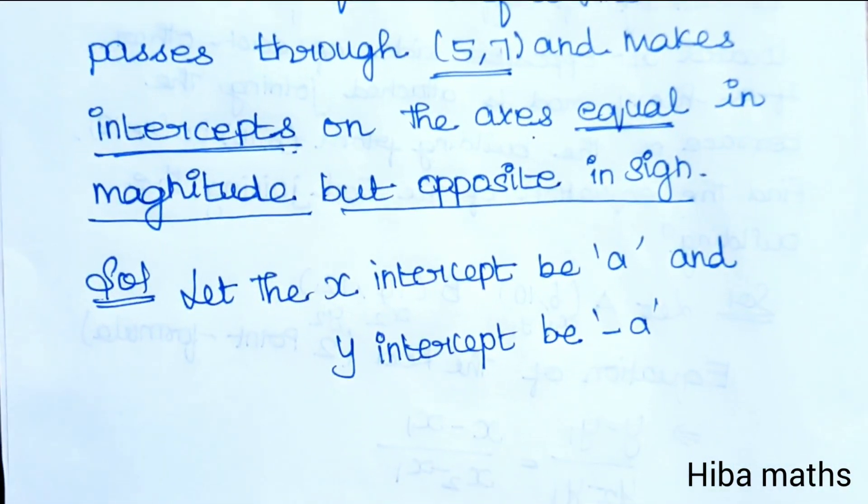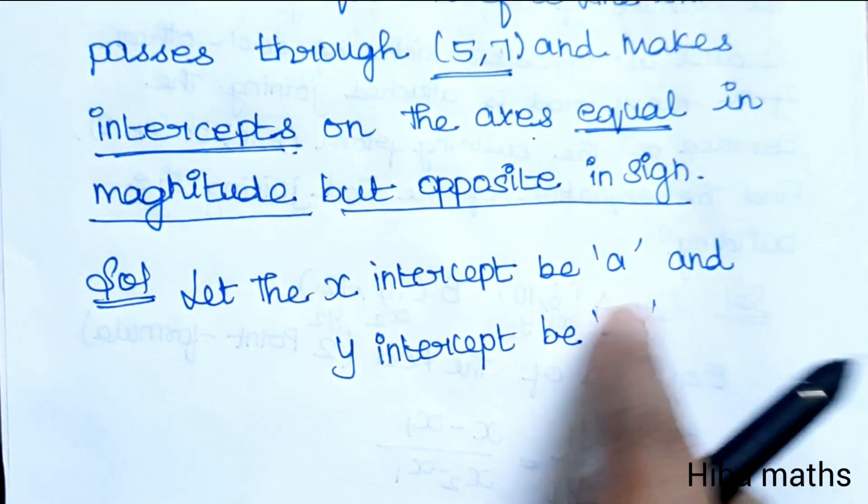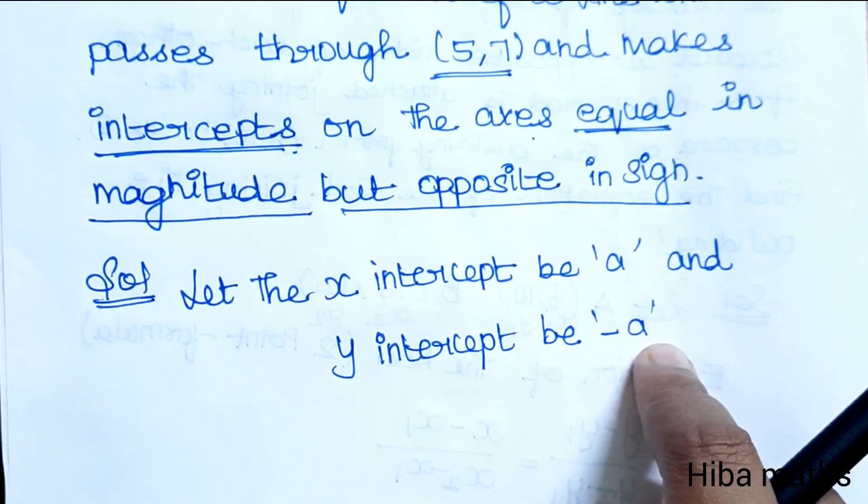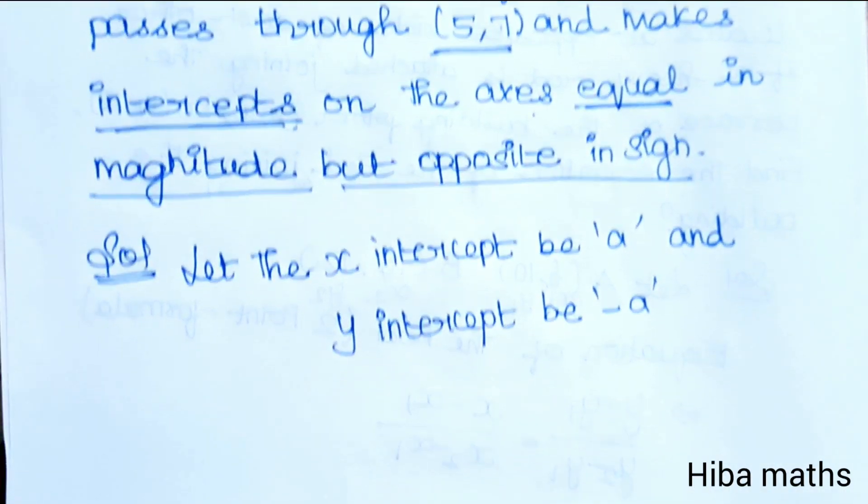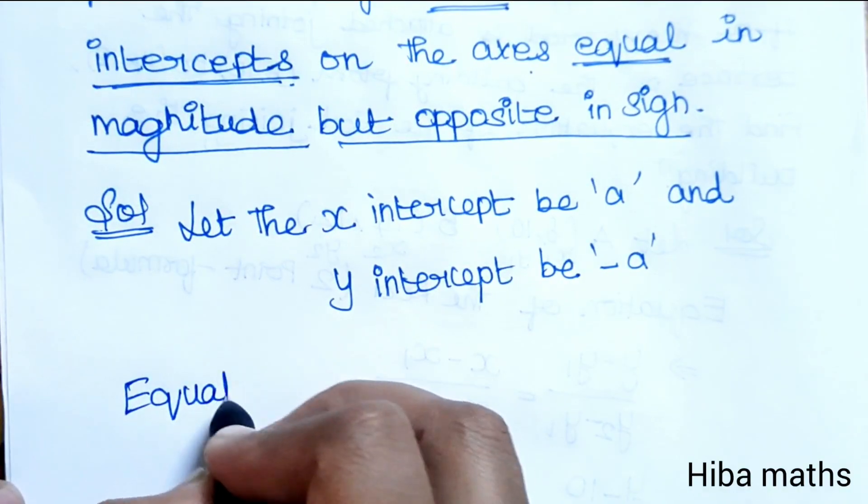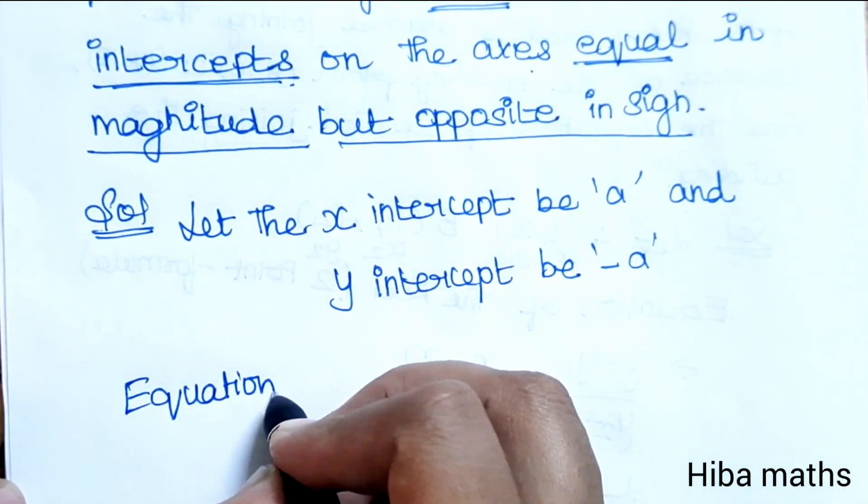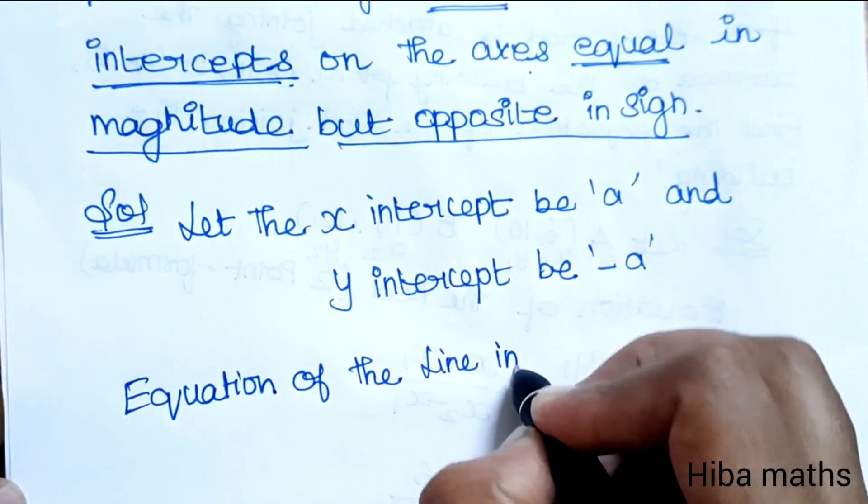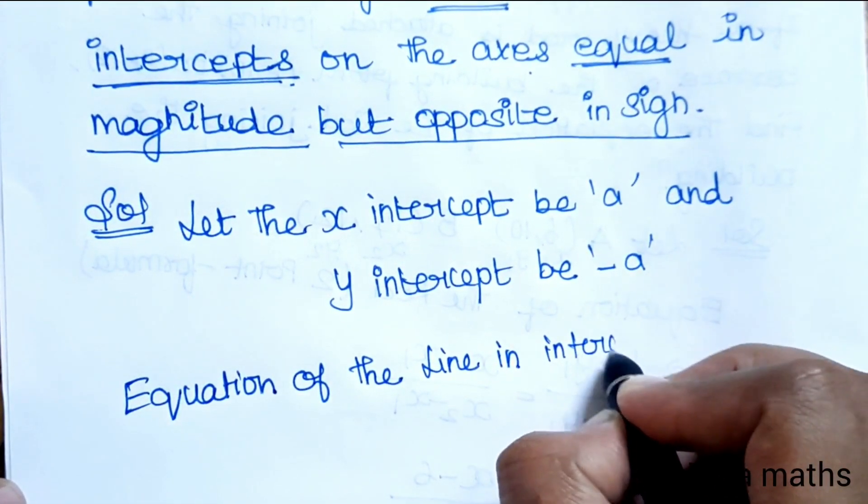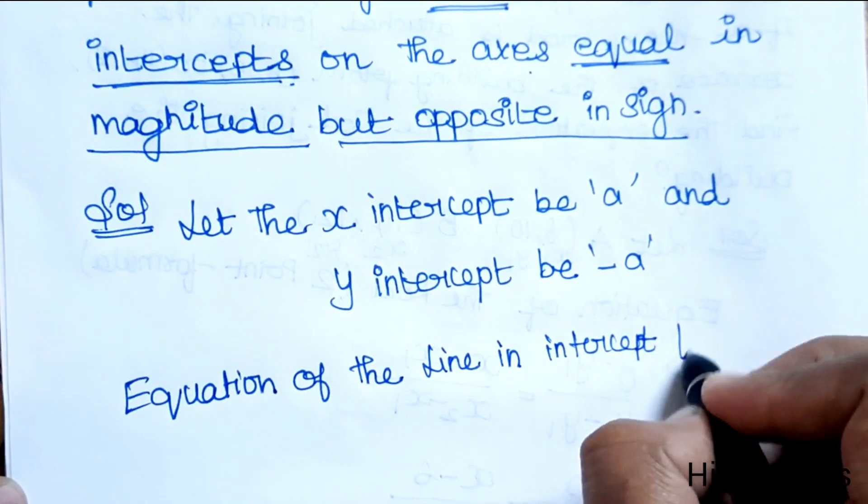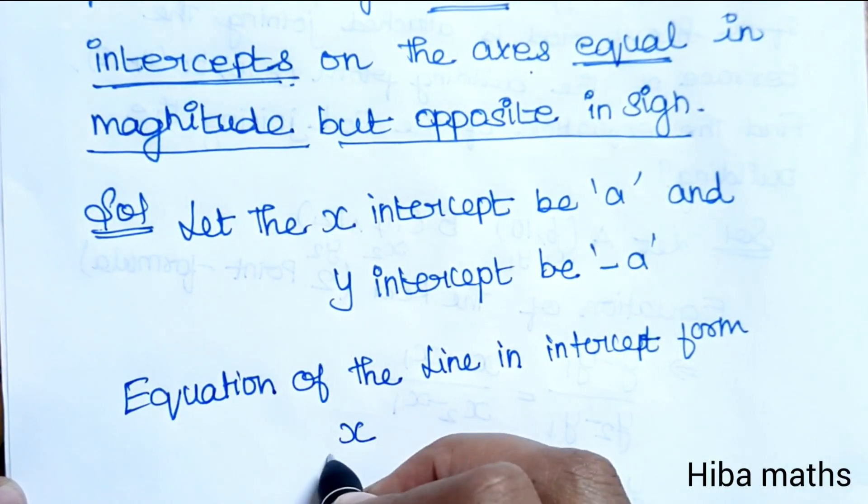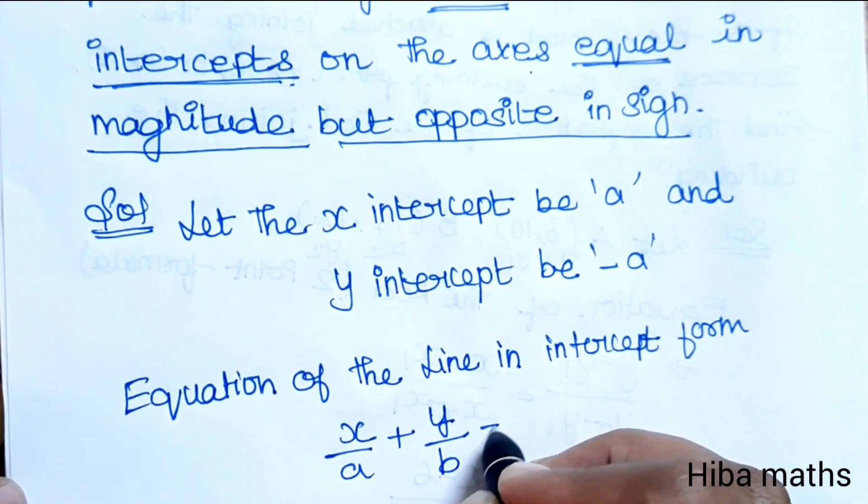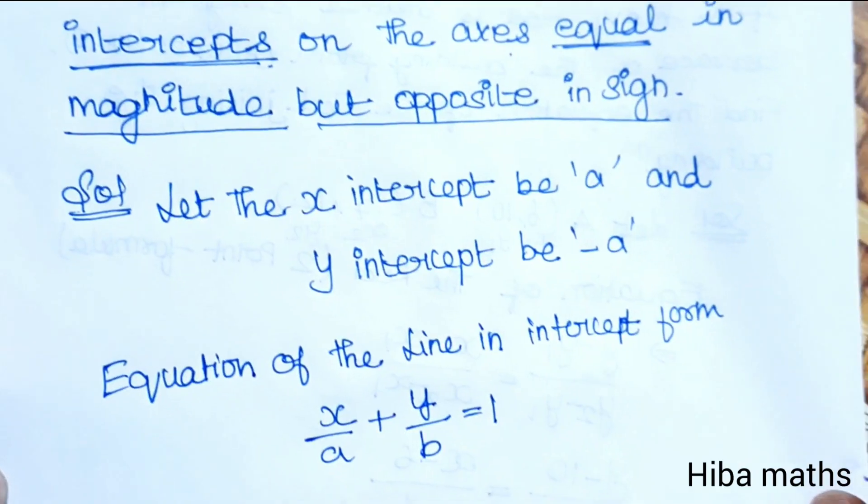Let the x-intercept be 'a' and y-intercept be '-a', equal but opposite in sign. Now, the intercept formula - equation of the line in intercept form is x/a + y/b = 1. This is the intercept formula we will use.